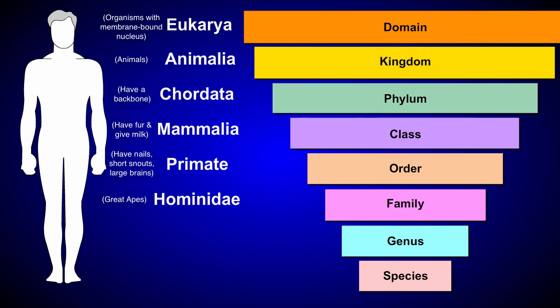Within each family, organisms are grouped into a genus category. Humans are within the genus Homo. They are the only living organisms within this genus, but other genera may have several different organisms within them.